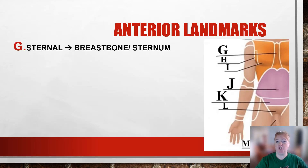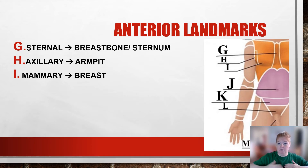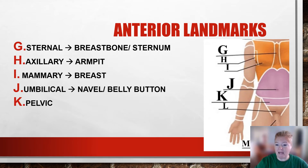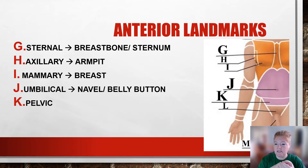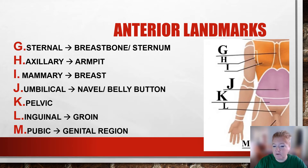Moving down the anterior torso, we have sternal, axillary, mammary, and umbilical — that's your belly button. Then we have pelvic, which is the pelvis area. If you look at this picture, you can see the abdomen where the umbilical area is, and below it is the pelvic region. Further below that is the inguinal, or groin, area.